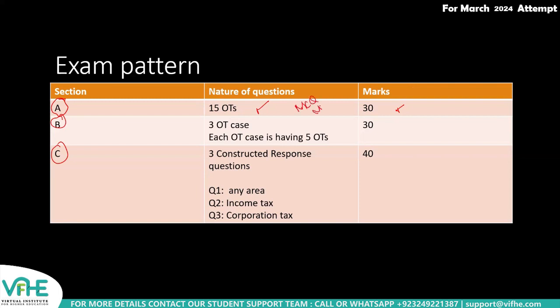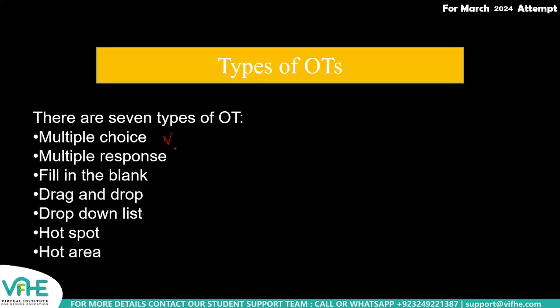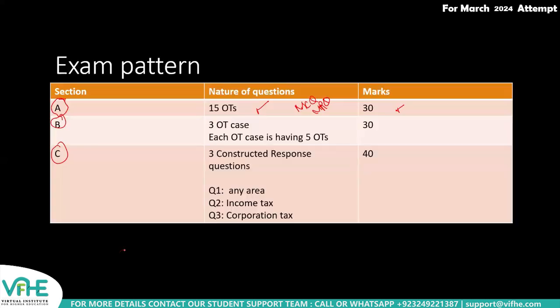OTs can be tested in multiple formats: multiple choice questions, multiple response questions, fill in the blank where you type your answer, drag and drop where you select an answer and drop it into the relevant box, a dropdown menu where you select from four options, and hotspot or hot area questions. There are multiple ways objective test questions can be tested, and as long as your answer is correct you will receive two marks.